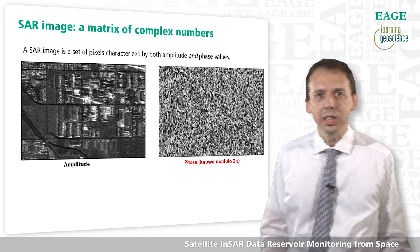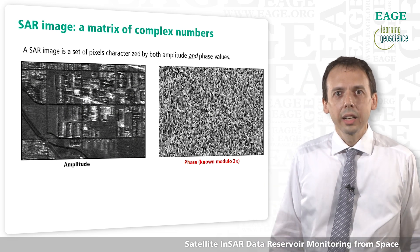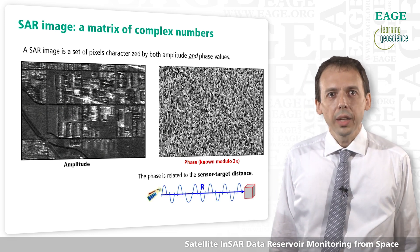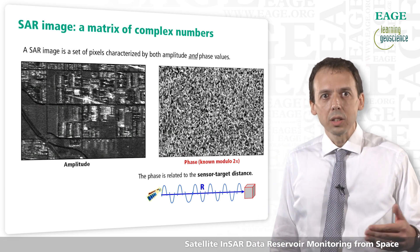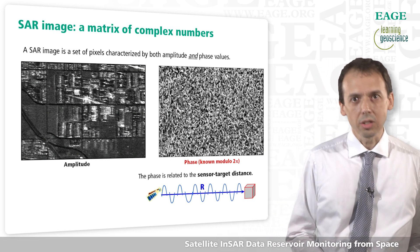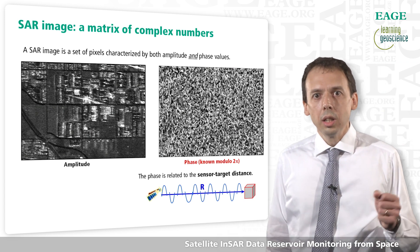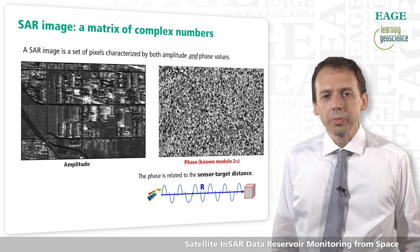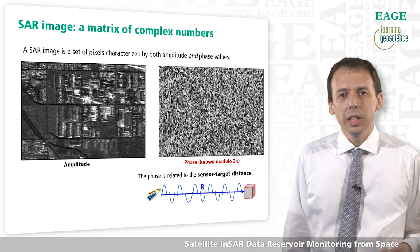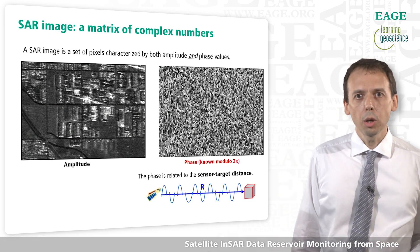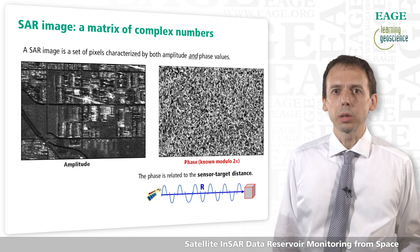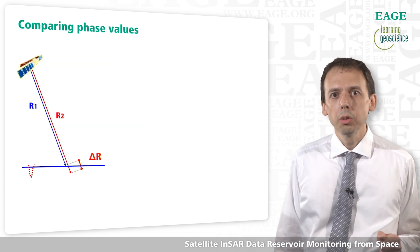A SAR image is a set of pixels characterized by both amplitude and phase information. Amplitude data are dependent on the amount of electromagnetic energy backscattered towards the radar sensor, while phase information is related to the sensor-to-target distance. The phase of a single SAR image, since it is known modulo 2π, is of no practical use. But the secret of SAR interferometry is to compare two SAR images acquired from the very same acquisition geometry and try to highlight possible phase variations.